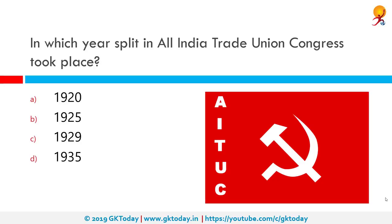In which year did the All India Trade Union Congress split? The correct answer is 1929. The All India Trade Union Congress is the oldest trade union federation in India. It is not politically affiliated to any political party, but itself is considered the third largest communist-leaning union in India after CPI and CPI(M).